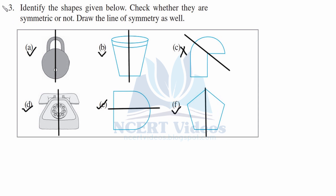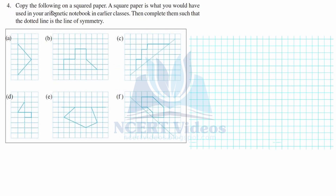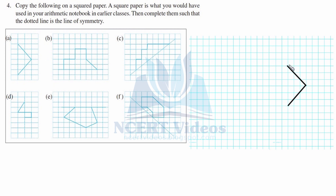Question 4: Copy the following figures onto squared paper — the same paper used in arithmetic notebooks for finding area. Complete them so that the dotted line is the line of symmetry, which is the reference point where you place the mirror. For part A, we construct it on the graph: go diagonally to the third square, make that mark, and go one, two, three — copying the figure. The line of symmetry is vertical.